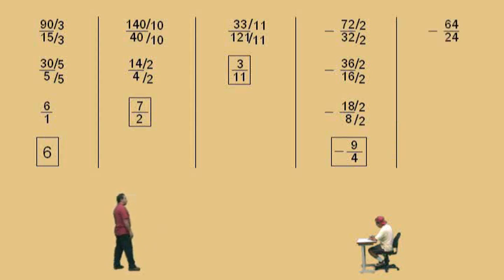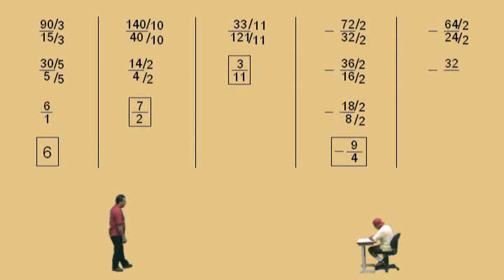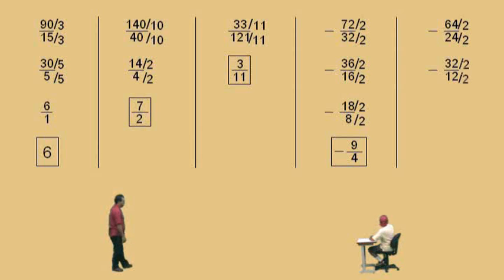Professor Perez: Okay, negative 64 over 24, Charlie — what number divides evenly into both 64 and 24? Charlie: 2. Professor Perez: 2, huh? You're still chicken, huh? All right. 64 divided by 2 is what? Charlie: 32. Professor Perez: 32. What's 24 divided by 2? Charlie: 12. Professor Perez: It's 12. Very nice there, Charlie. Now, again, we're going to divide by what? Charlie: 2. Professor Perez: 2's. All right.